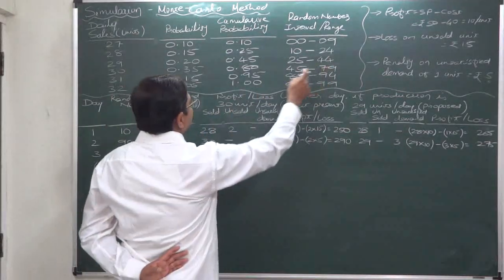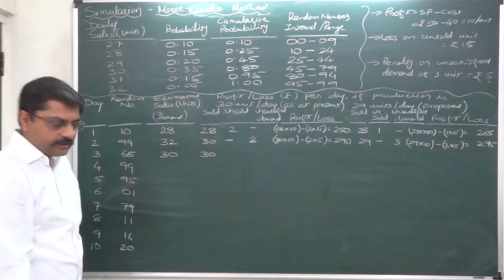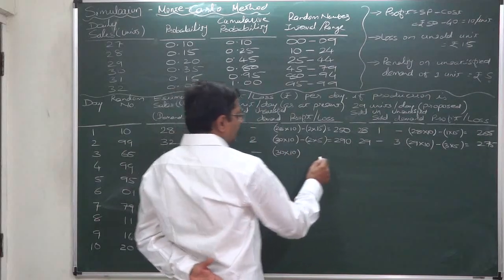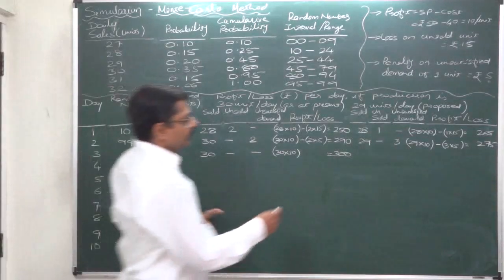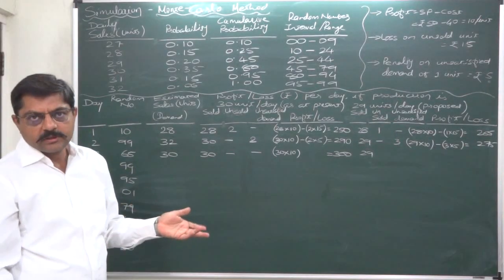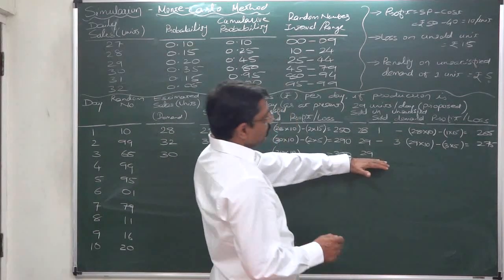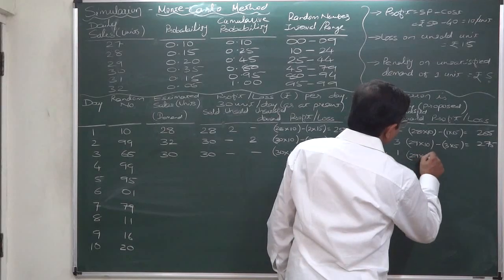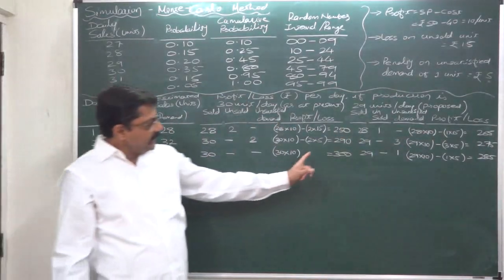Day 3: random number is 65, which falls between 45 and 79, so demand is 30. If we produce 30 units, sales are also 30 — no unsatisfied demand and no unsold units. Profit = 30 × 10 = 300. If production is 29, we can sell only 29 units. Demand of 1 unit remains unsatisfied. Profit = 29 × 10 − 1 × 5 = 290 − 5 = 285.